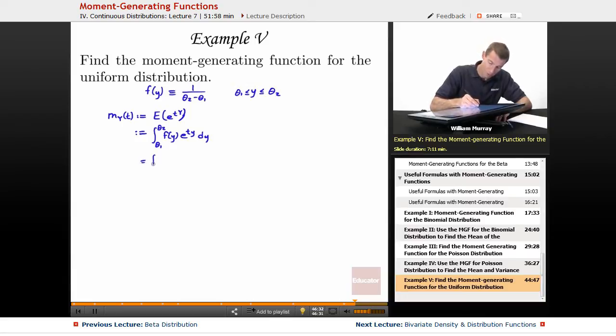This is the integral from theta 1 to theta 2 of, f of y is 1 over theta 2 minus theta 1, that's just a constant there, e to the ty, dy. Not such a bad integral, really not too bad. The answer is 1 over theta 2 minus theta 1, that's a constant so I can pull it out.